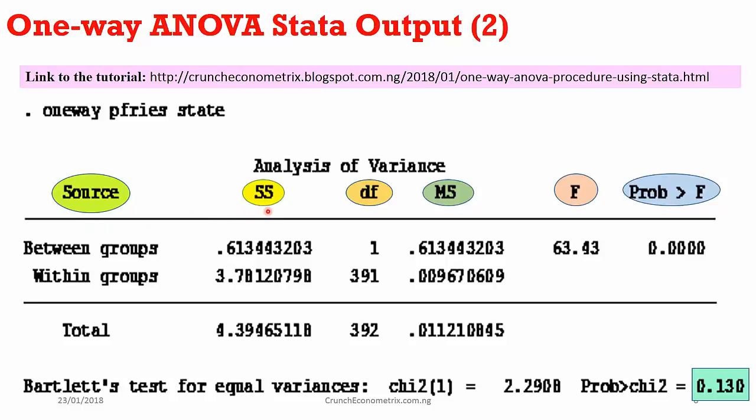Next I have SS, which simply means sum of squares. The first one is the explained sum of squares — those variations you can attribute to your model or regression. The second one is the within-group sum of squares, which is the unexplained sum of squares attributable only to random forces. I have 3.78 that cannot be accounted for by my model.